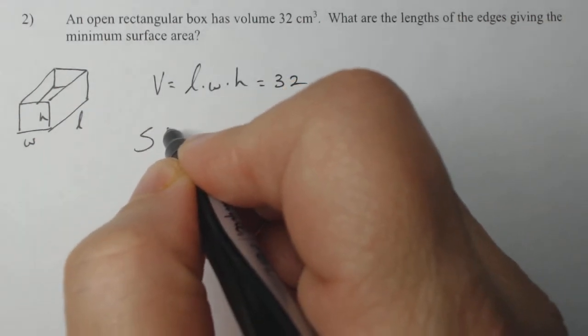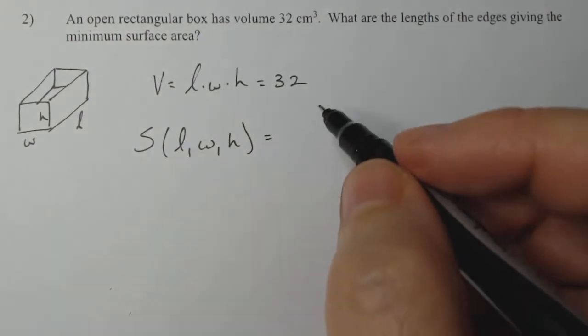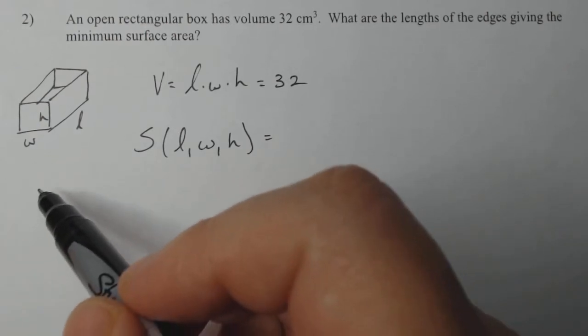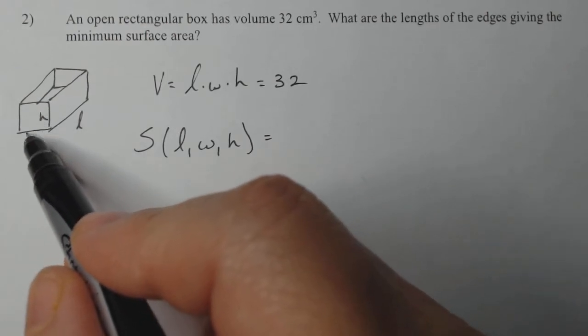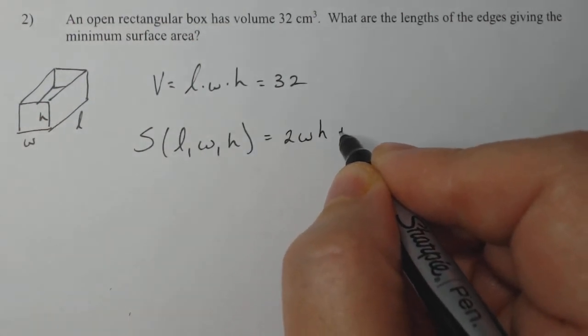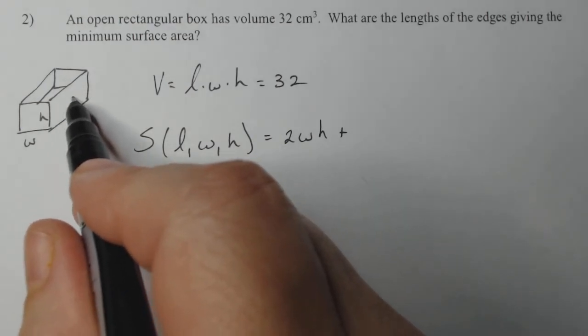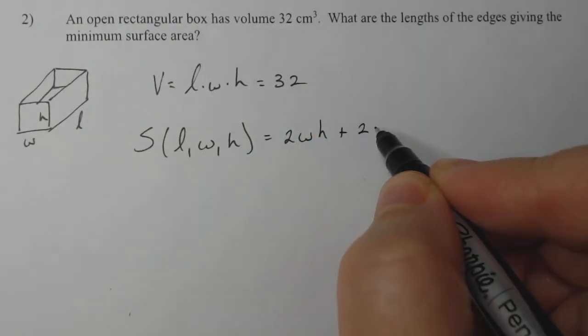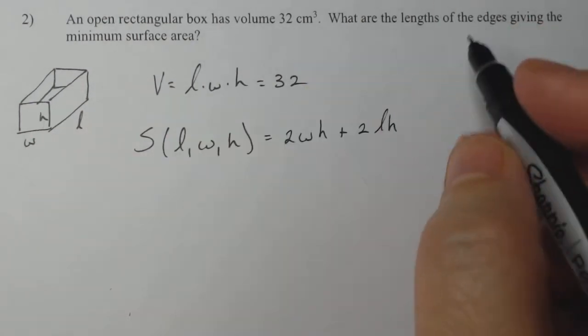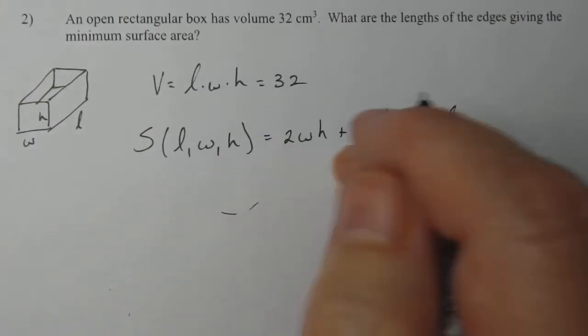Now surface area, I did it in terms of length, width, and height. That's a great place to start so that you make sure that you have this right. So I have two sides that are width and height front and back, two length and height sides on each side, and there's only one side that's just width times length because it's open top.